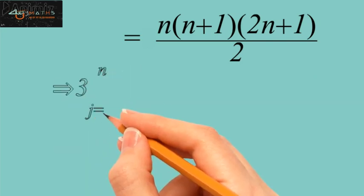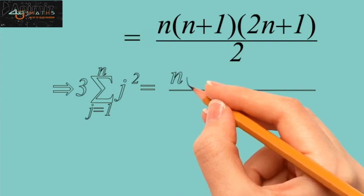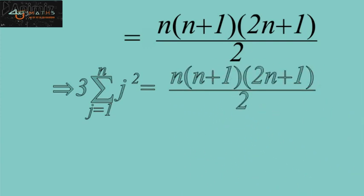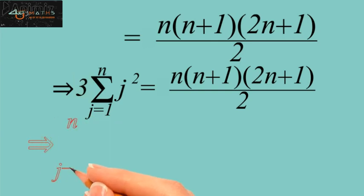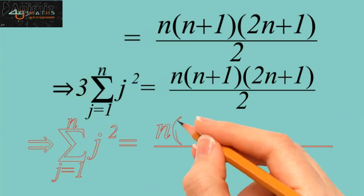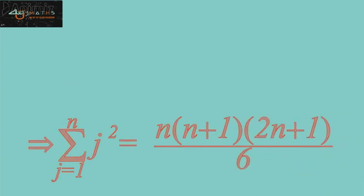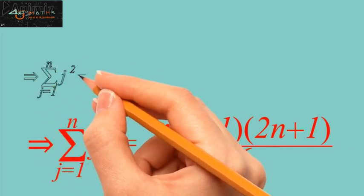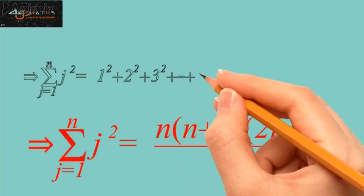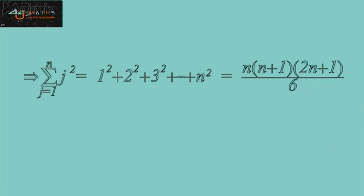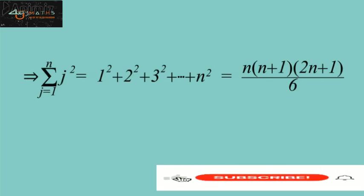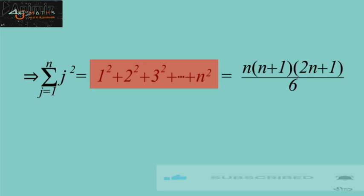Thus, 3 times the summation j=1 to n of j² is equal to n(n+1)(2n+1) divided by 2. Now dividing both sides by 3, we get: summation j=1 to n of j² equals n(n+1)(2n+1) divided by 6. This proves that the sum of the squares of the first n natural numbers is equal to n(n+1)(2n+1)/6.